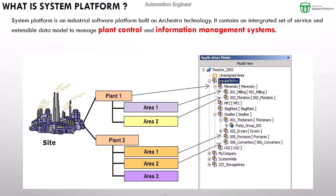This is an example for plant control. This is the site — site means the factory. In the factory, we have Plant 1 and Plant 2. In Plant 1, we have Area 1 and Area 2. In Plant 2, we have Area 1, 2, and 3.